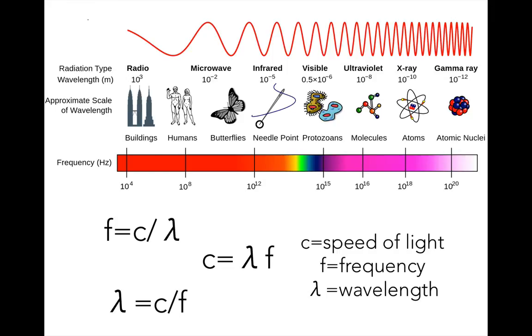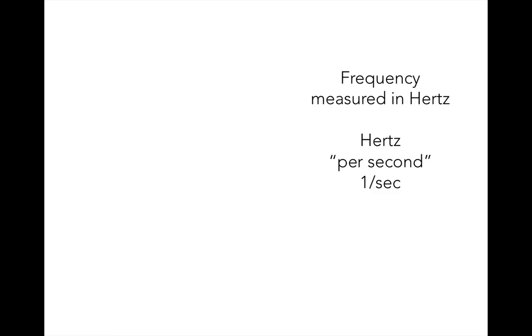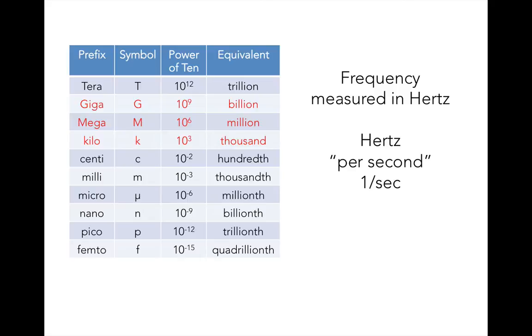This order of decreasing wavelength in the electromagnetic spectrum is also an order of increasing frequency. The gamma ray end has the highest frequency, and radio light has the lowest frequency. Remember that we measure frequencies in hertz, which correspond to per seconds. Something with a frequency of 10 hertz happens 10 times per second. Even the longest wavelengths of light have fairly large frequencies when measured in hertz.